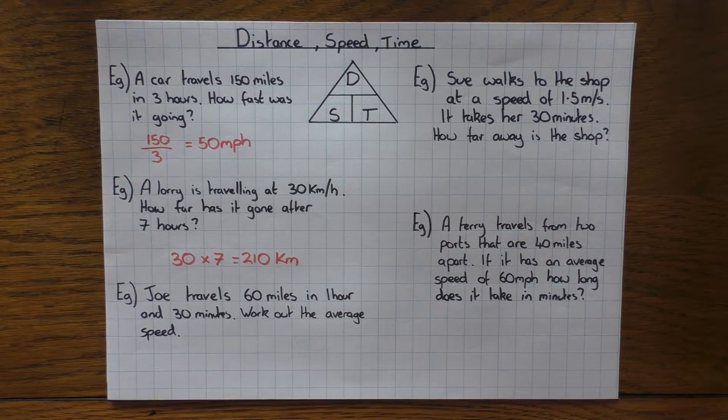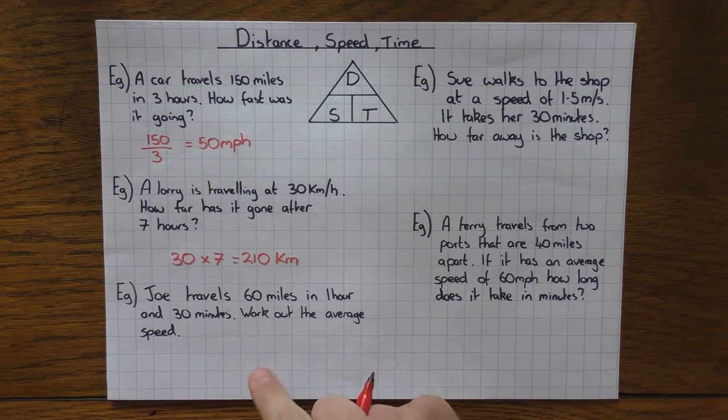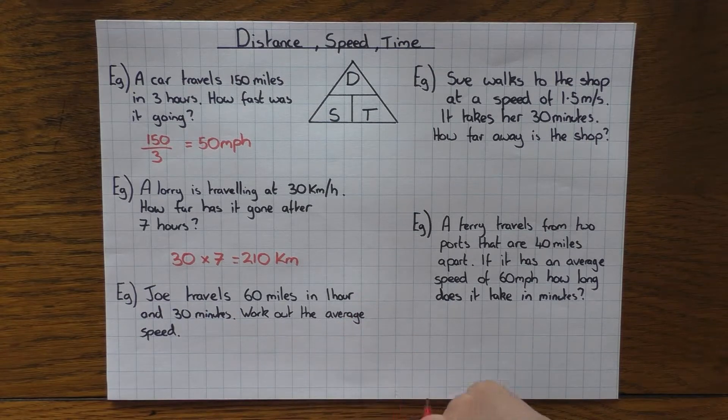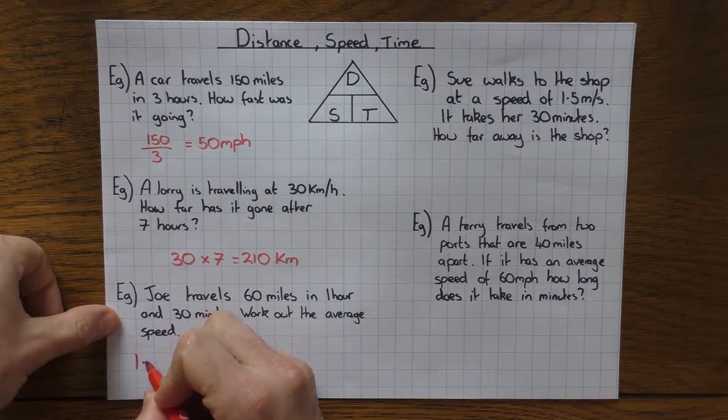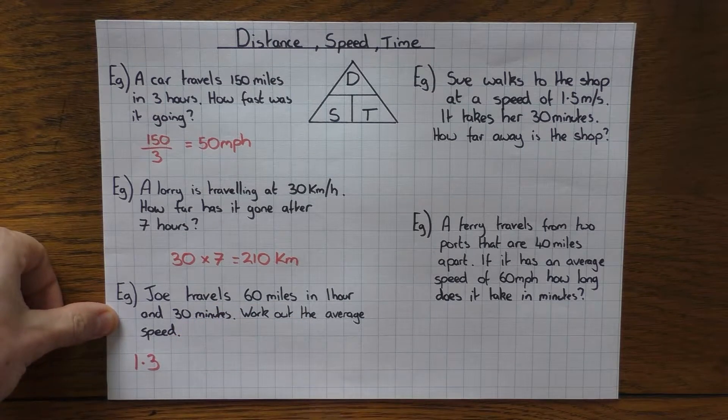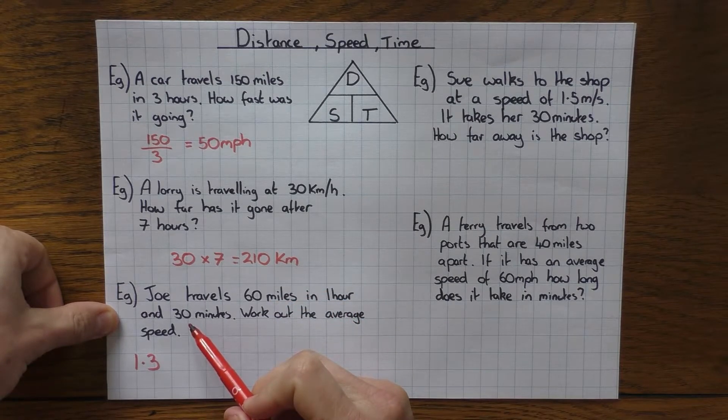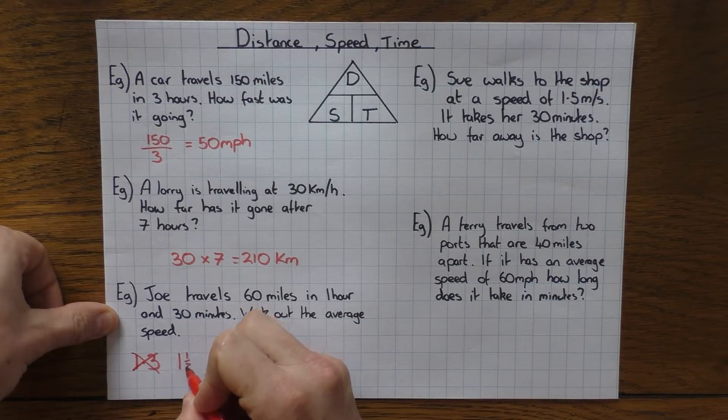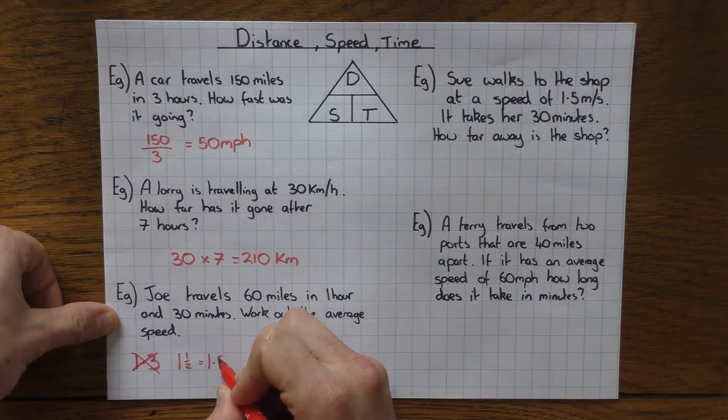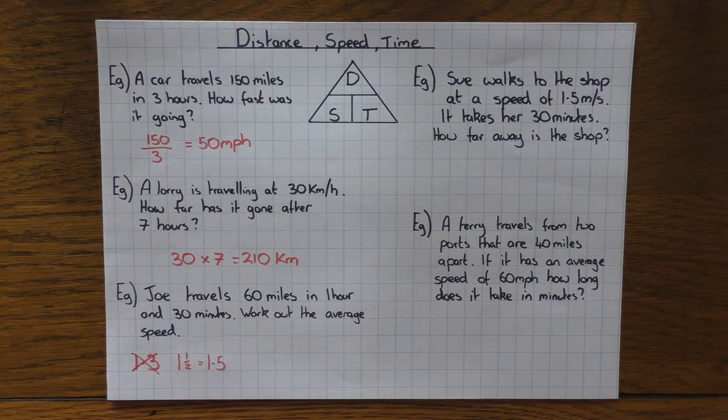Next one, Joe travels 60 miles in one hour and 30 minutes. Work out the average speed. Now this is the first point I want to make. When people see one hour and 30 minutes, they sometimes think, oh that's 1.3 hours. No. One hour and 30 minutes, well there's 60 minutes in an hour. So 30 minutes would be a half. So it's actually not 1.3. It's one and a half, which of course as a decimal is 1.5. So be very careful when they start doing minutes that you remember it's out of 60 minutes within an hour, not out of 100. That's the first mistake.